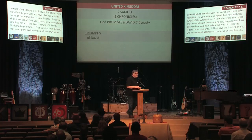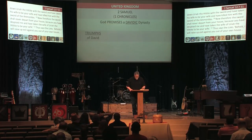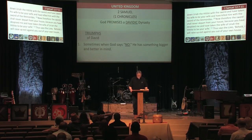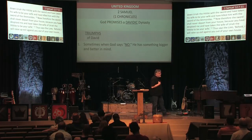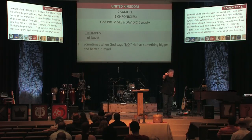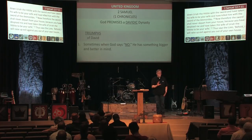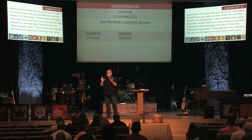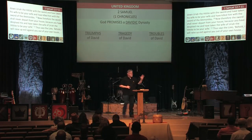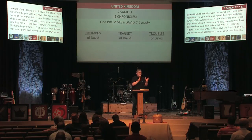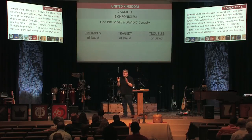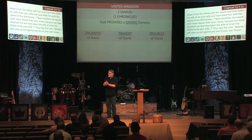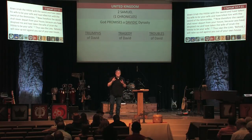There are a couple of applications from 2 Samuel. The first one is simply this: sometimes when God says no, he has something bigger and better in mind. When David said he wanted to build God a house — a really good thing — God said no because he actually had something bigger and better in mind. That was his covenant with David — promising that Messiah would be a descendant of Abraham, of the tribe of Judah, through the specific family of David.